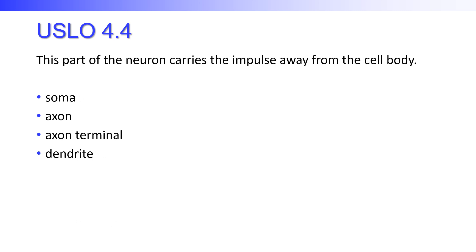This part of the neuron carries the impulse away from the soma or cell body. Is it the axon or the axon terminal? It's not the dendrite — that receives the impulse. The answer is the axon, which is attached to the cell body and carries the impulse away from it.